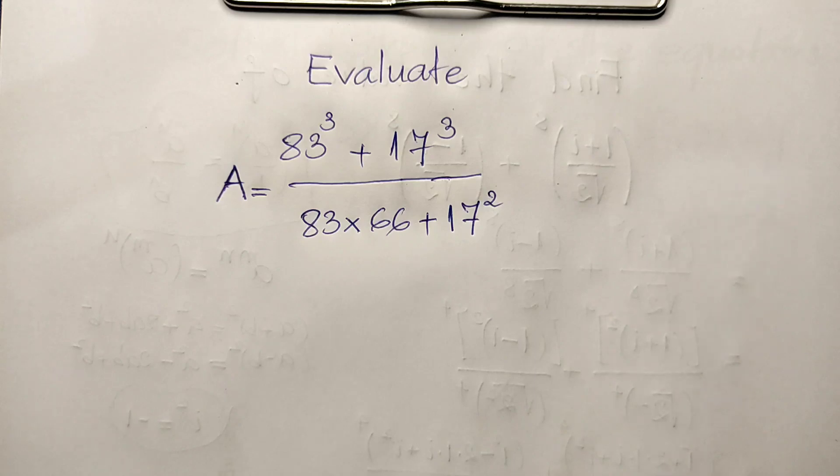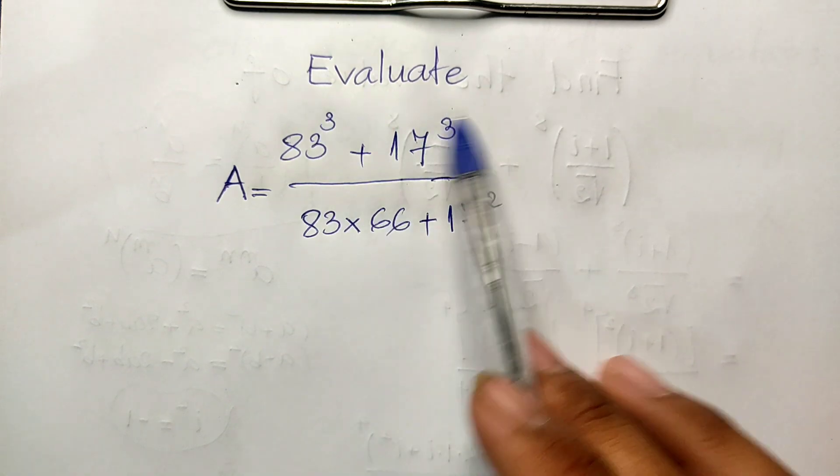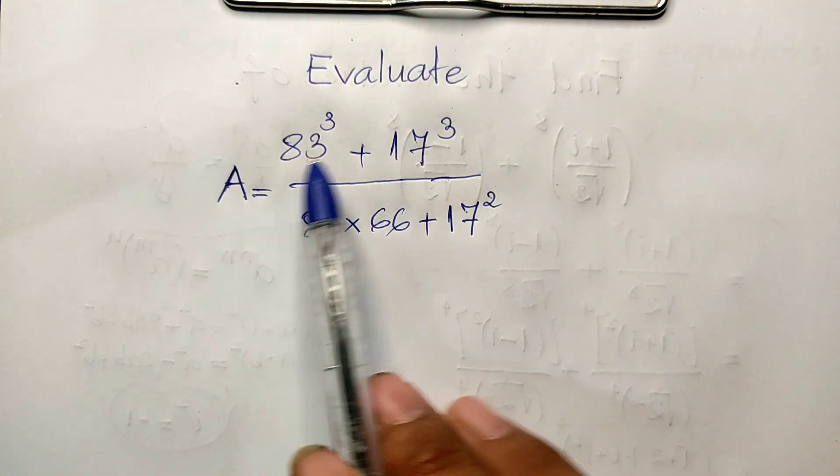Hello everyone, welcome to my YouTube channel. Today I have an exercise. Evaluate this expression: A equals 83 to the power of 3 plus 17 to the power of 3.